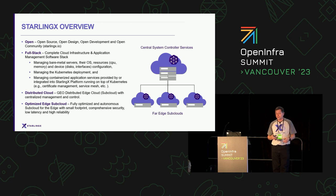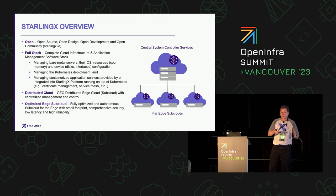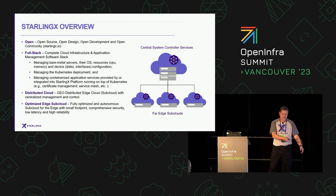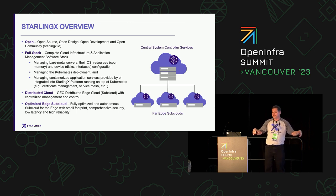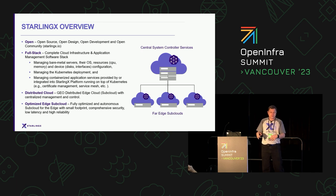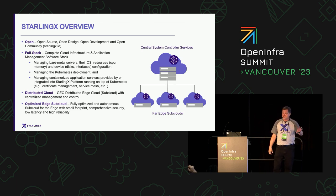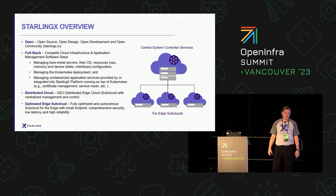StarlingX has a wide range of deployments. It can be deployed as a standalone cloud on a single server, or multiple nodes with controller, worker, and storage nodes. But by far our most popular deployment option is distributed cloud, where you have geographically distributed sub-clouds. In the telco space those sub-clouds are typically single-server clouds. They're autonomous clouds, and the central cloud in the distributed environment is there for automation and orchestration of managing the infrastructure across all the remote sub-clouds.